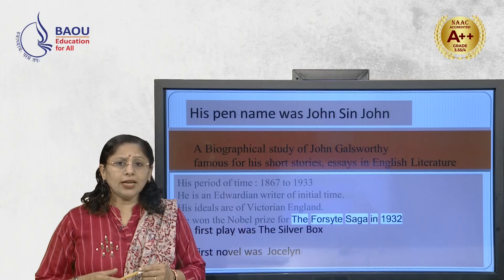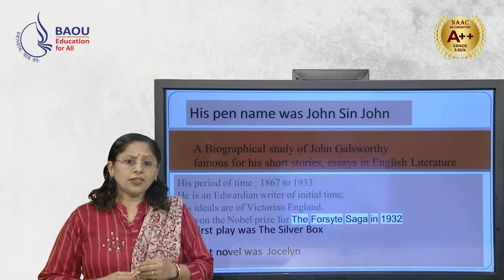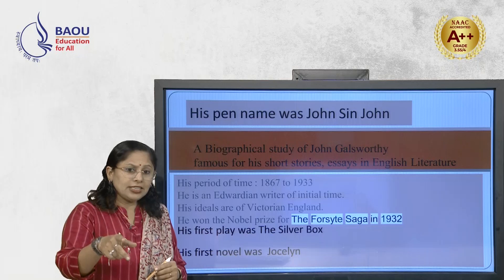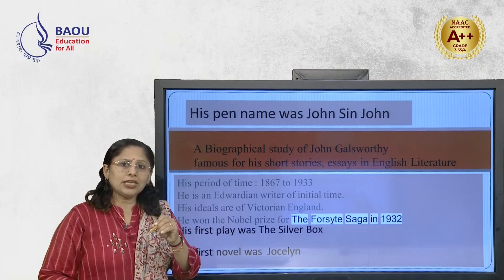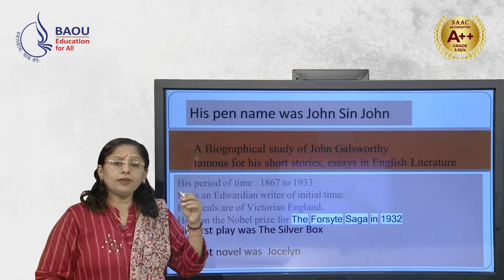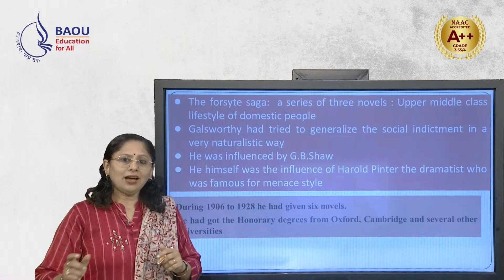He won the Nobel Prize for The Forsyte Saga in 1932. That was a novel comprising three serial novels under this particular title, through which he received the great Nobel Prize. His first play was The Silver Box and his first novel was Jocelyn. These were his first works that you must remember when writing about Galsworthy's biographical information.